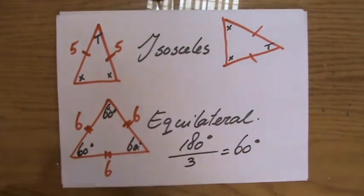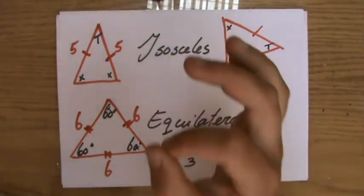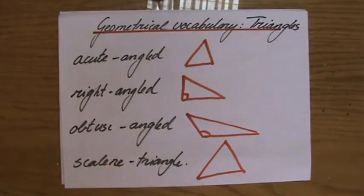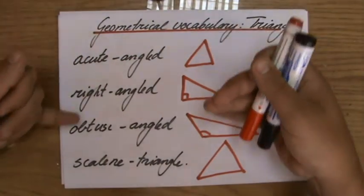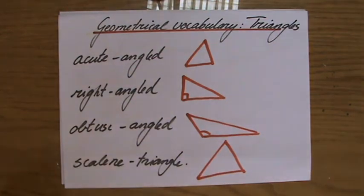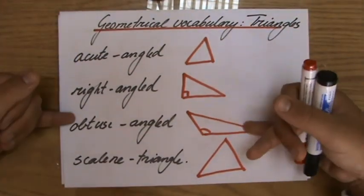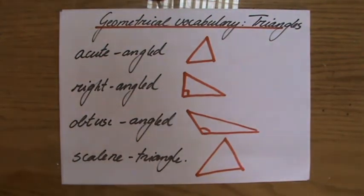Isosceles triangle, equilateral triangle. Two very important triangles to understand. Then we have the right angle triangle, which is important, and perhaps less important, but still, it's good to be aware of those terms. Acute angle triangles, obtuse angle triangles, and a scalene triangle.